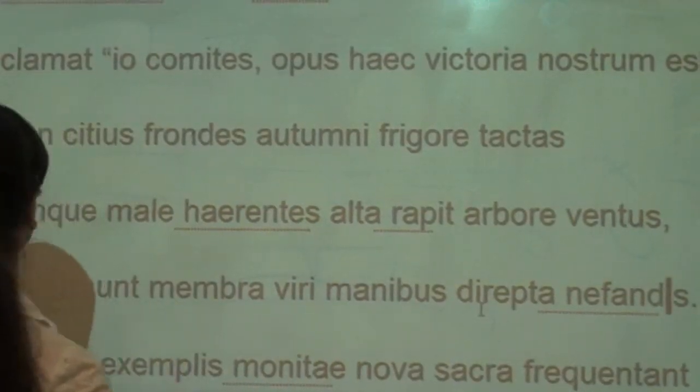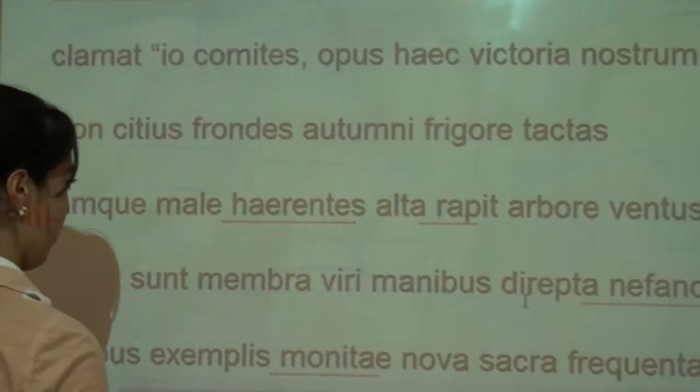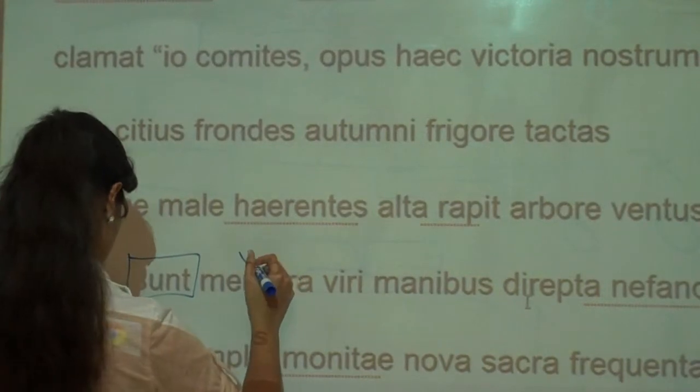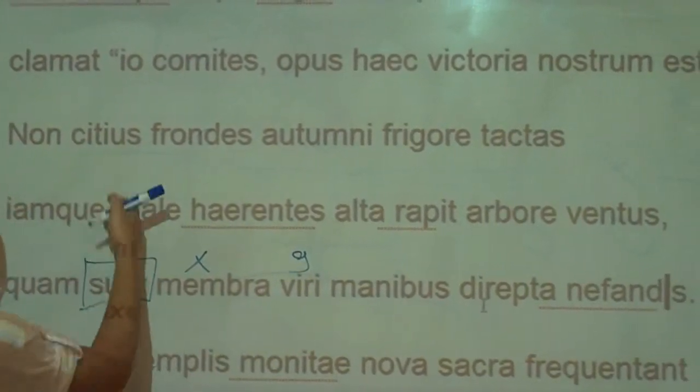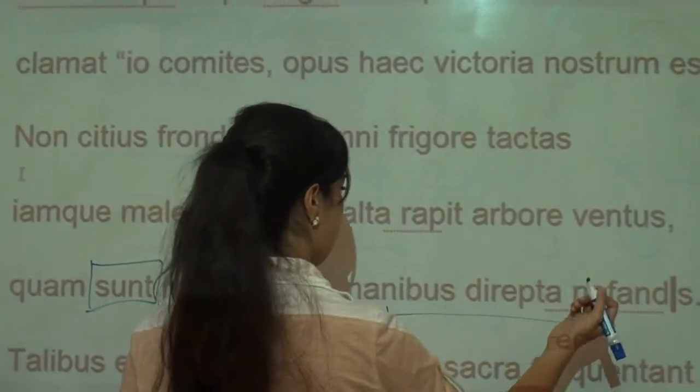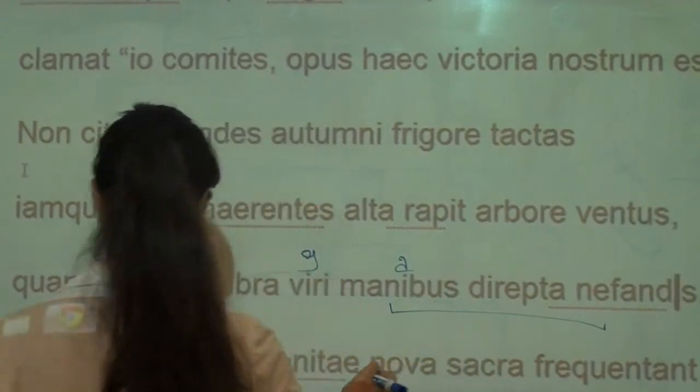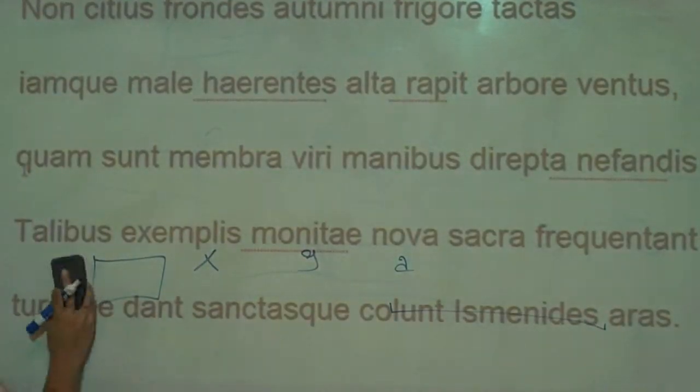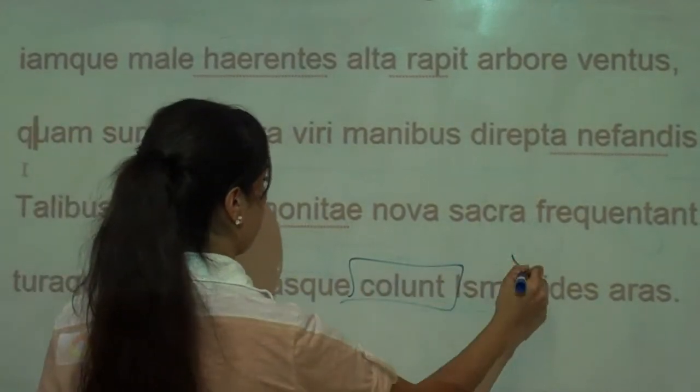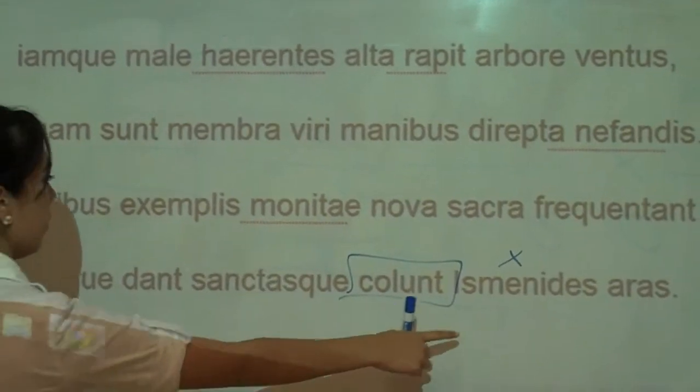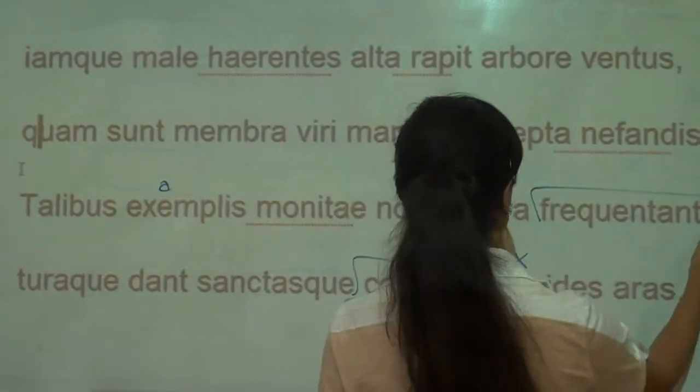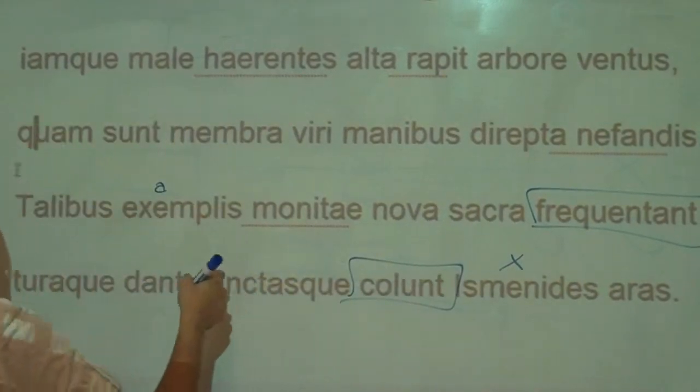Okay, then the limbs of man are snatched by the wrongful hands. By such example - having been warned, the Ismenian women by this example frequent or repeat the new sacrifice, and they give incense.